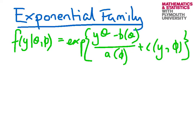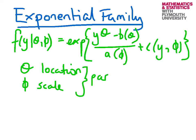In this format, theta is some kind of location parameter, phi is some kind of scale parameter, and we find that the variance is a function of both these parameters.